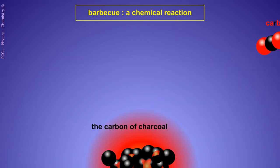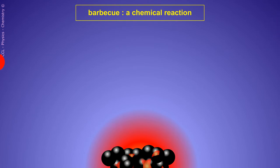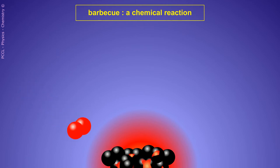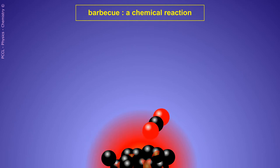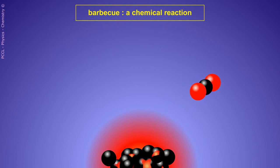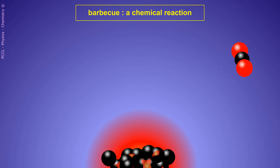Barbecuing is certainly the simplest chemical reaction. We have two chemical reagents: oxygen from the air and carbon from charcoal. When the two come into contact at a certain temperature, they combine to produce carbon dioxide. The formula for carbon dioxide is CO2.